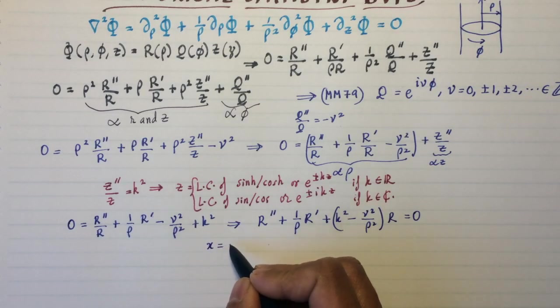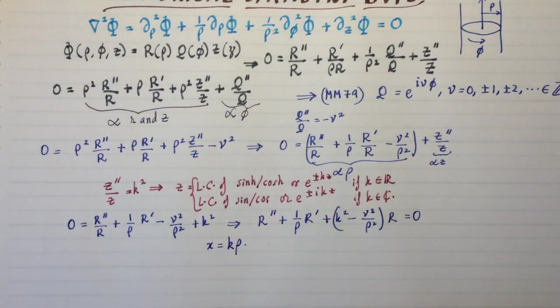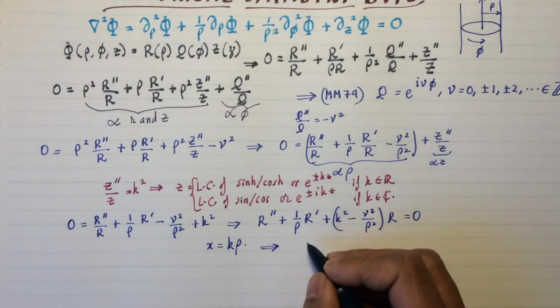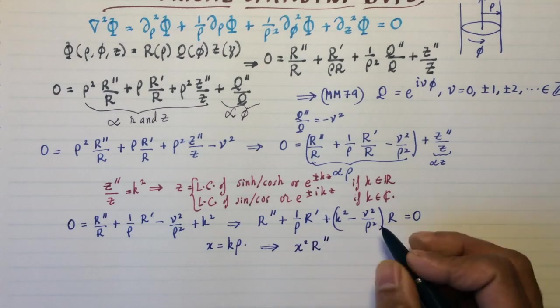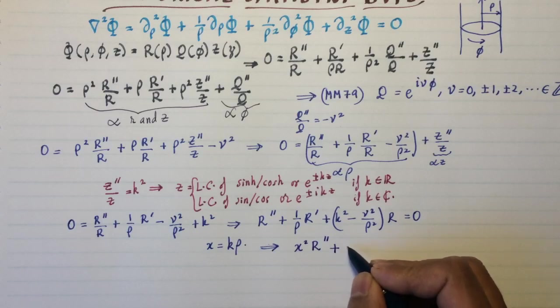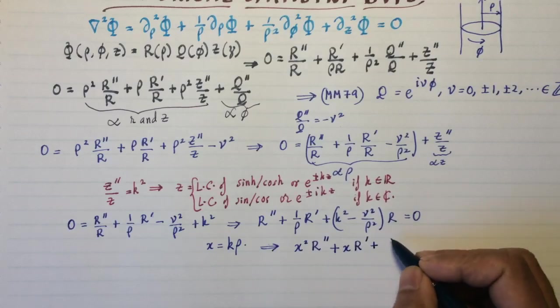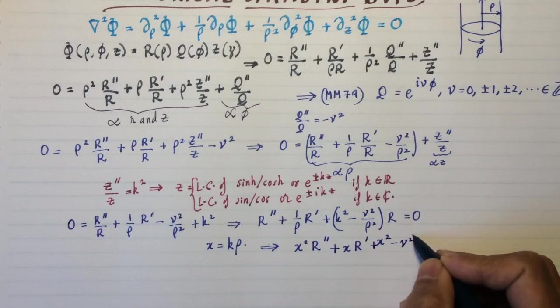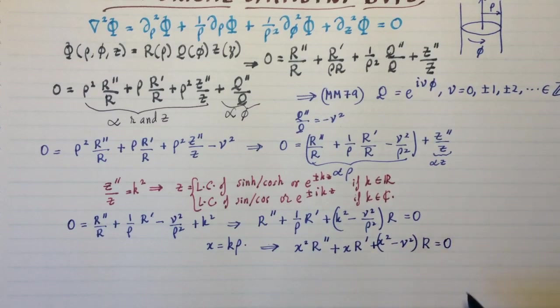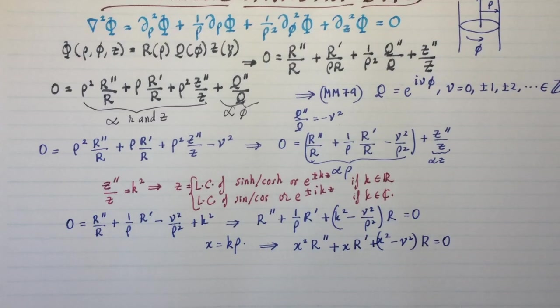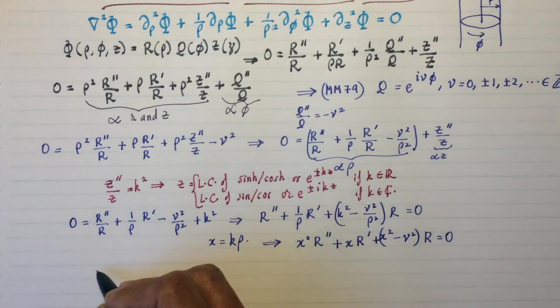It turns out that you have to make the substitution x = kρ. If you do that, a few steps later, you can read this up on my notes or you can do this on your own. You get x²R'' + xR' + (x² - ν²)R = 0. And that's the standard form of the Bessel functions. I have to warn you that primes now mean the derivative with respect to x and not with respect to ρ. So the factor of k is implicit when you do the differentiation.